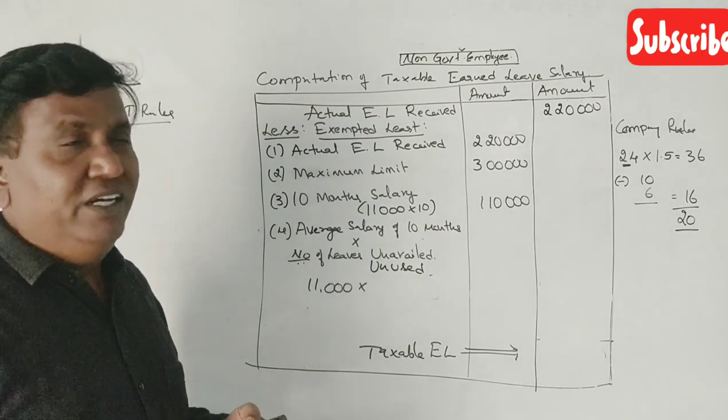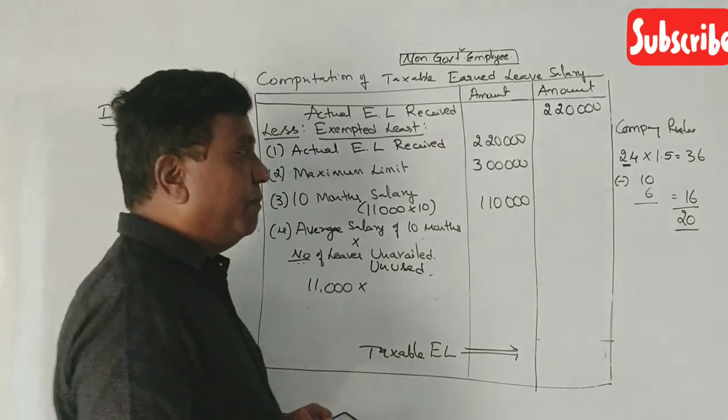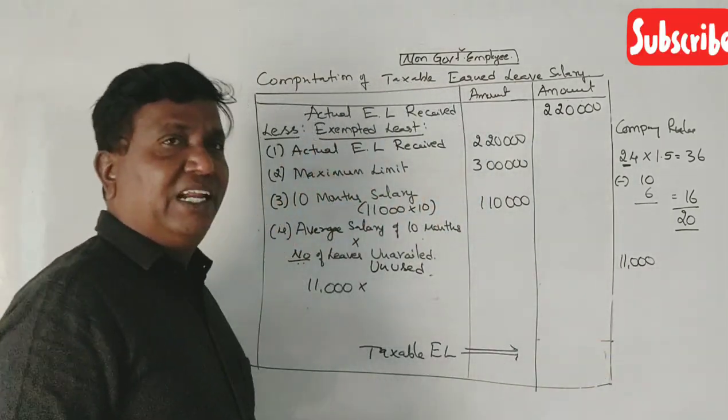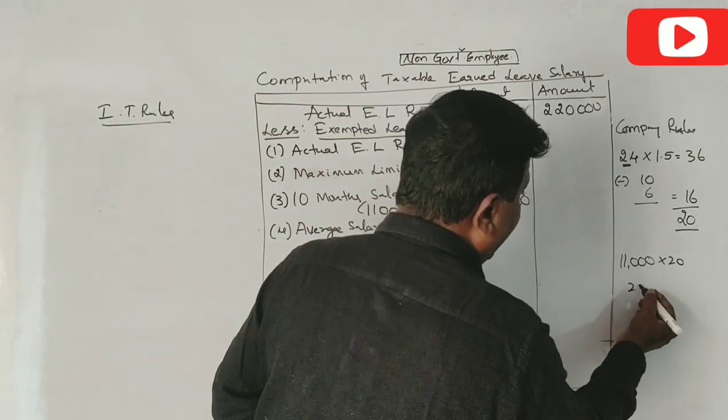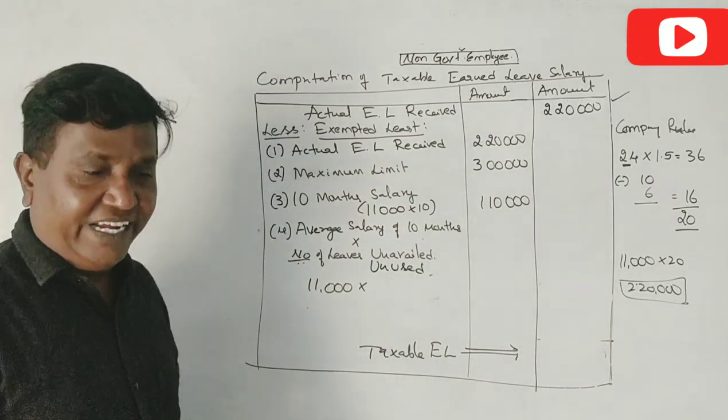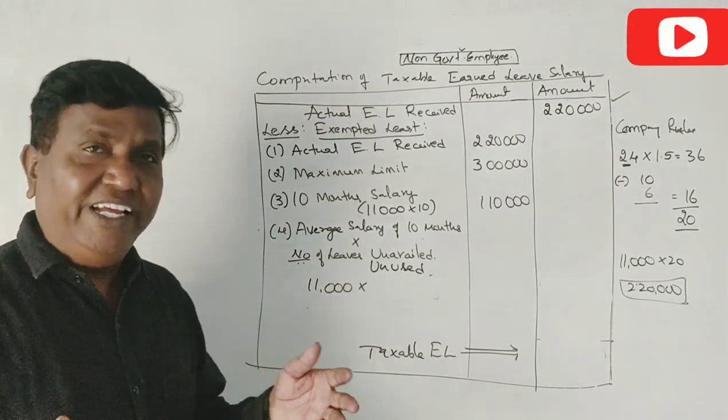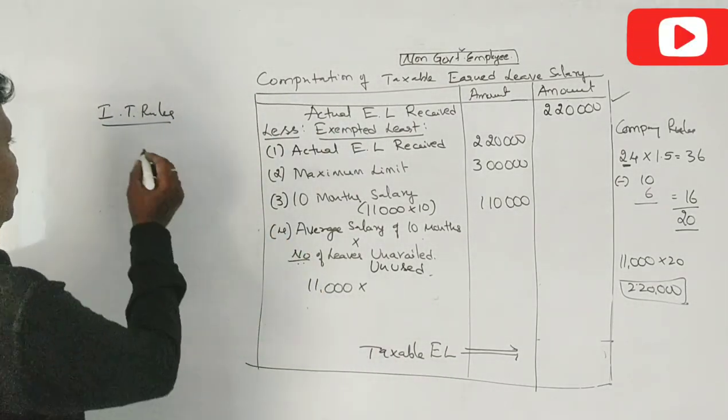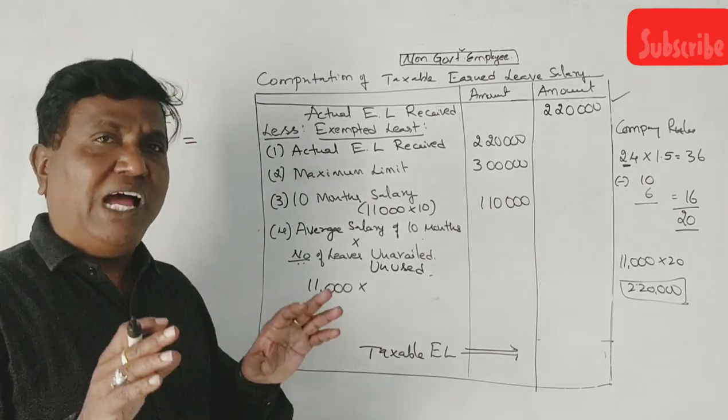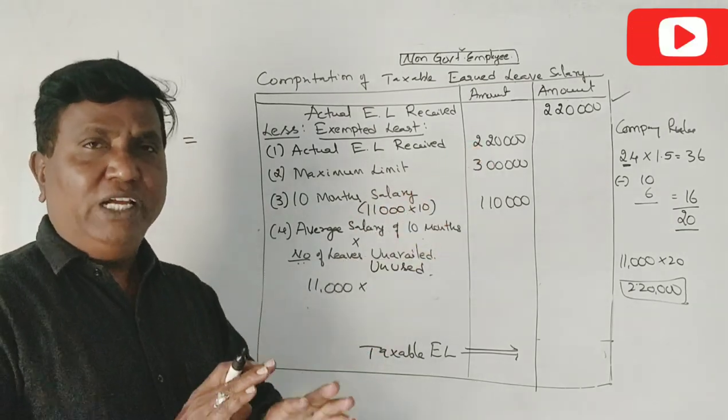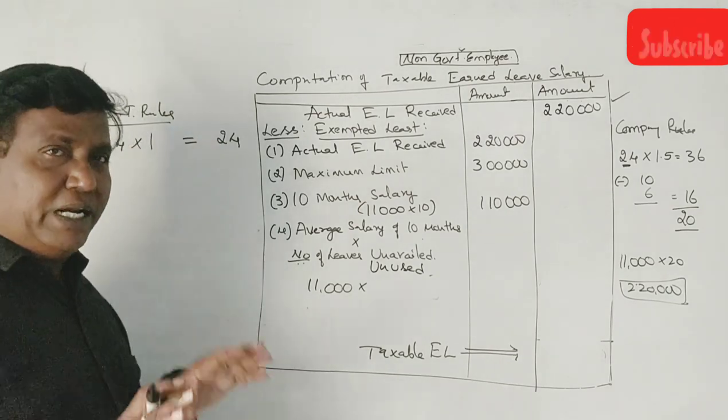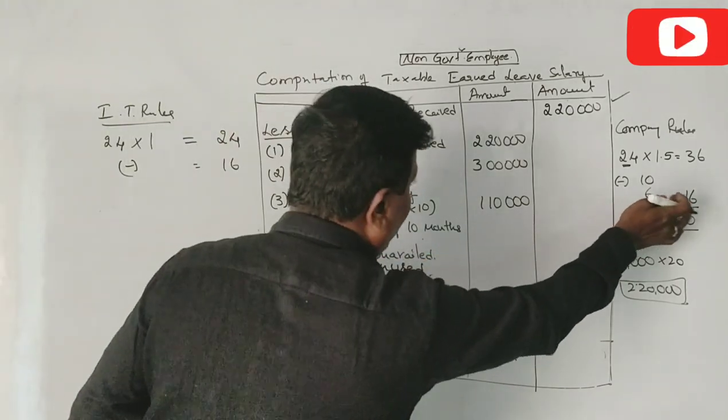We had 20 months of leave credit. If you get the average salary in retirement, then you will get 20 months. So, the income tax rules is different. If you choose income tax rules, in a year they are eligible for the IT rules according to what has already been used.